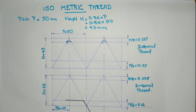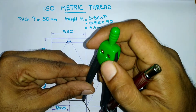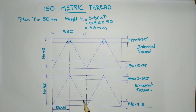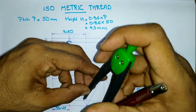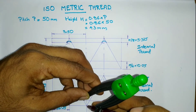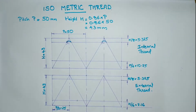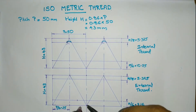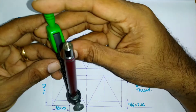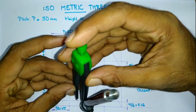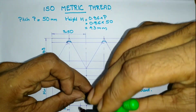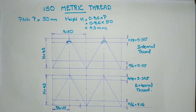Also bisect the angle formed by the bottom offset line of the external thread and the flank of the thread. Extend the bisecting line to meet at a point on the construction line for obtaining the center point of the external thread root curvature. Draw the root curvature using a compass.